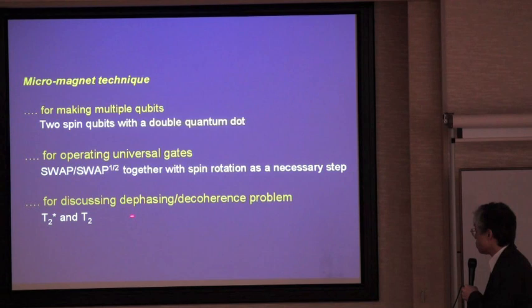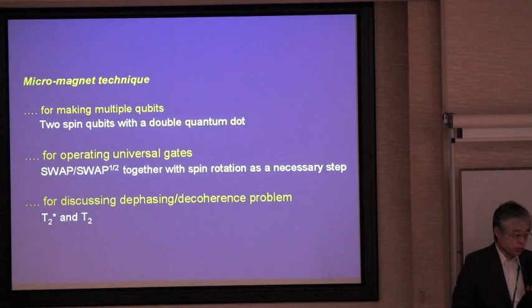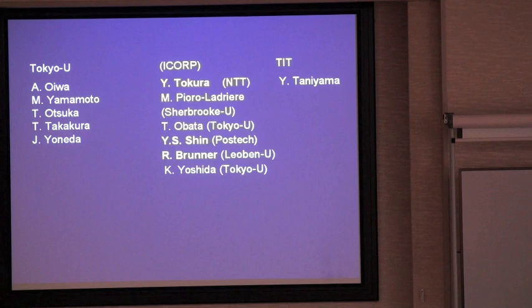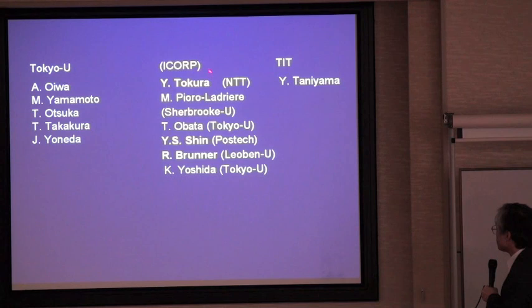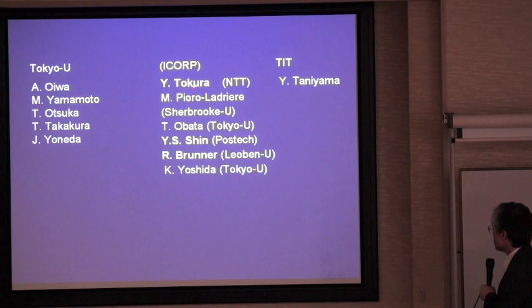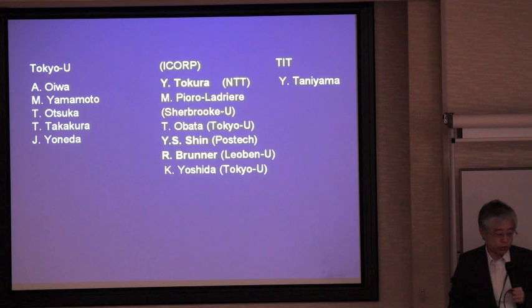We also discuss the dephasing and coherence problem measured for these spin qubits. Here is a list of my collaborators at our university and iCorp, belonging to the Japan Science and Technology project. Key contributors include Professor Tanyama, Yasuhiro Tokura from NTT, and Yunsov Shin and Roland Bruna.